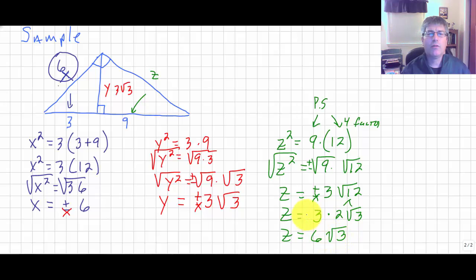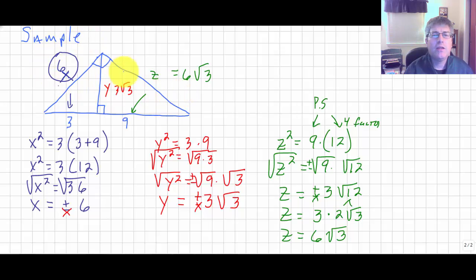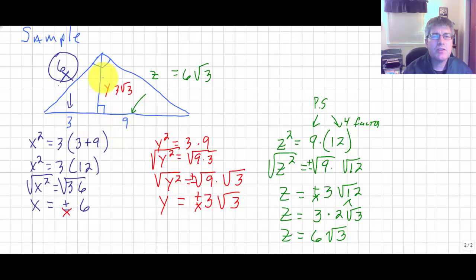So z equals 6 times the square root of 3. I've now used all three altitude on hypotenuse theorems to solve for the three unknown sides, and we'll get more practice with different options when I see you in class.